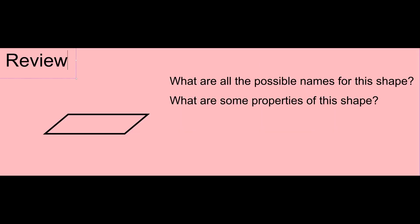This lesson covers a lot of vocabulary, so let's review. Look at my shape. What are the possible names for this shape? Well, it is a polygon, and it is a quadrilateral, and I can call this quadrilateral a parallelogram. What are some of the properties of this shape? I noticed that there are two pairs of parallel sides and there are no right angles. See you in class tomorrow.